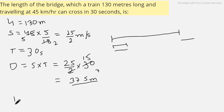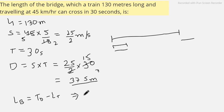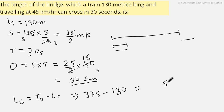The length of the bridge equals the total distance minus the length of the train. The total distance is 375 meters and the length of the train is 130 meters. Therefore, the length of the bridge is 375 minus 130, which equals 245 meters. This is our answer.